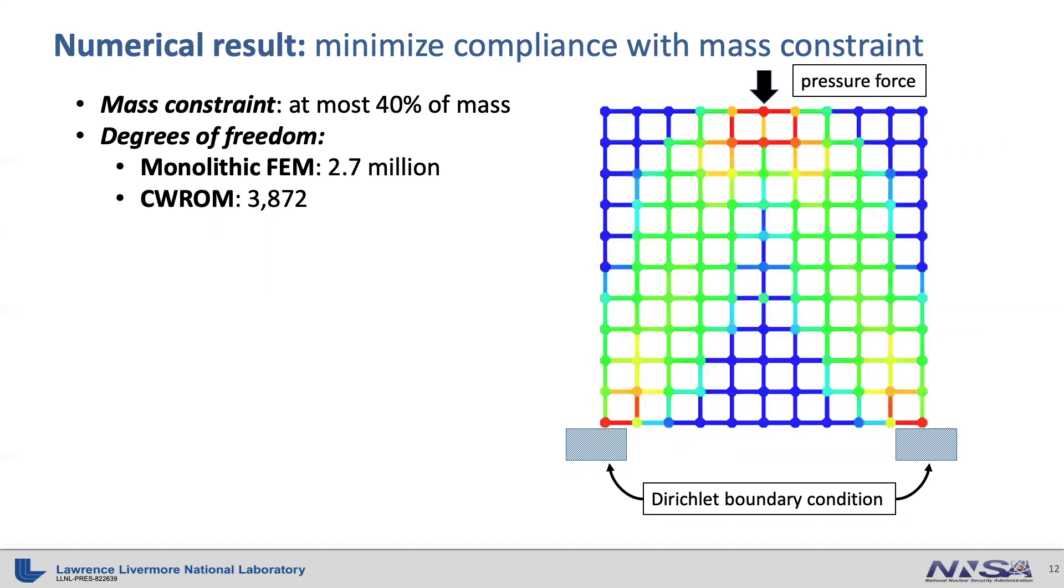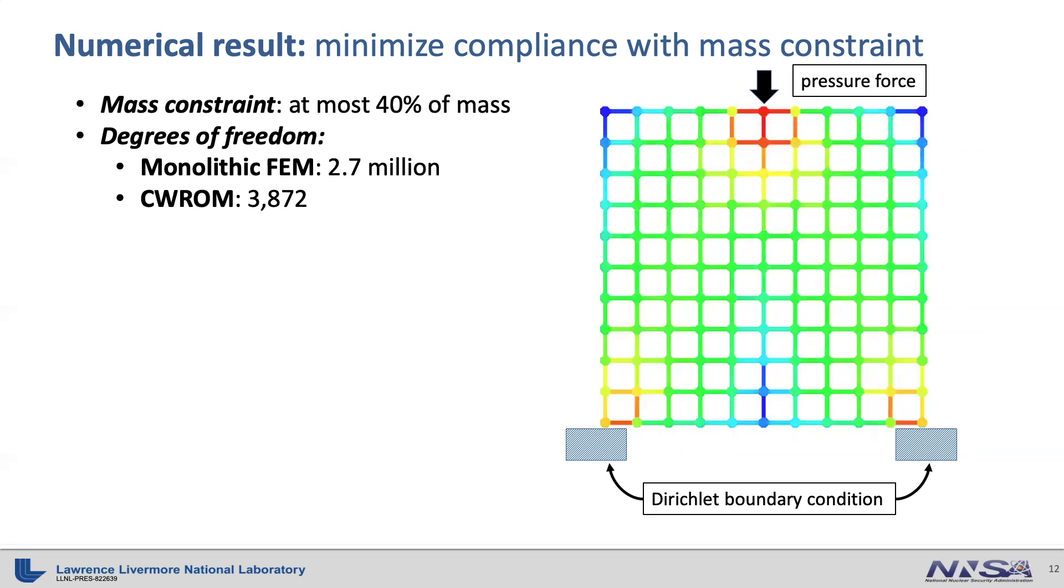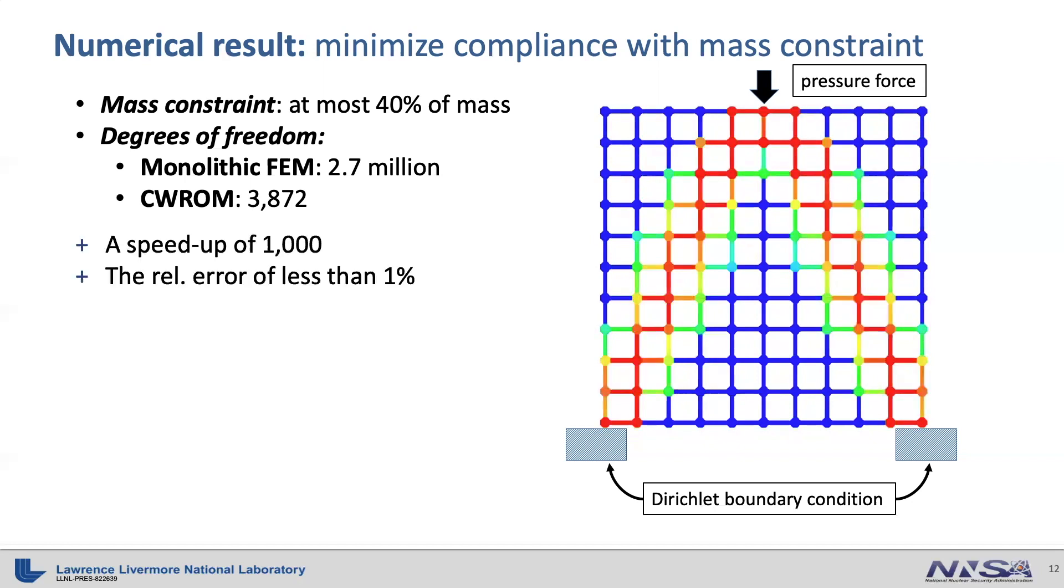The movie shows the optimization history from the beginning. Initially, it started with a uniform density variable and evolves into an optimal design, where blue component implies no materials there, while red component implies a density variable of 1, so you put materials there. With component-wise reduced order model, we achieve a speedup of 1,000 and accuracy of less than 1% relative error.